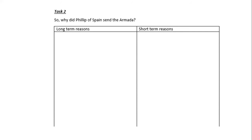It's important to note that this attempt to remove Elizabeth was a long-term project. Philip of Spain did not just send one Armada — he sent several. Therefore it's the longer-term political, religious, and economic rivalry between Spain and England that is the main reason for the Armada, not the short-term reasons. Here is a slightly lighthearted look at the long-term campaign Philip had to try and remove Elizabeth and restore Catholicism to England.